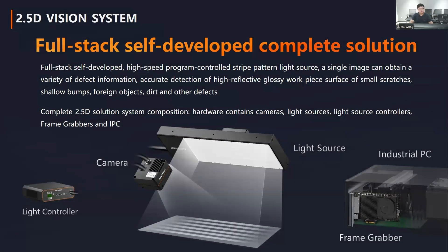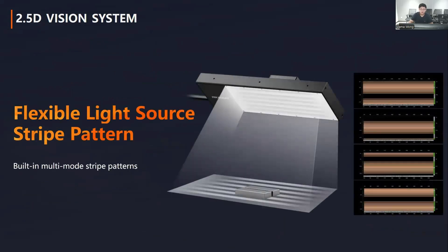Now I will introduce Hackerrobot's full-stack self-developed 2.5 dimension system. It is combined with several parts: a light controller, a line-scan camera, a programmable self-developed light source, and also an industrial PC and frame grabber connected to the system. This is our self-developed programmable stripe light, which has a built-in multiple-mode stripe pattern. It projects eight different kinds of stripes onto the surface.